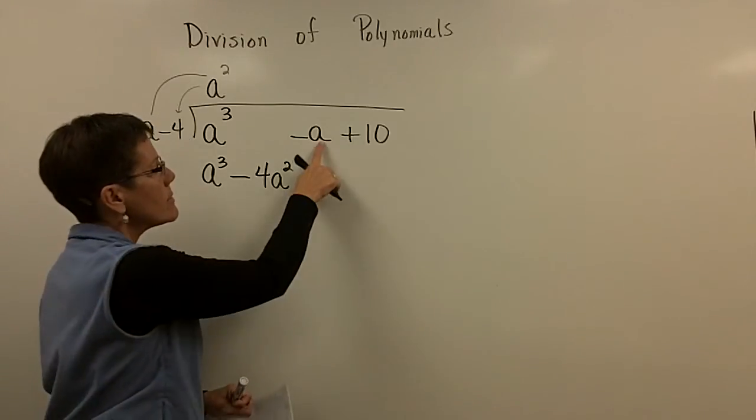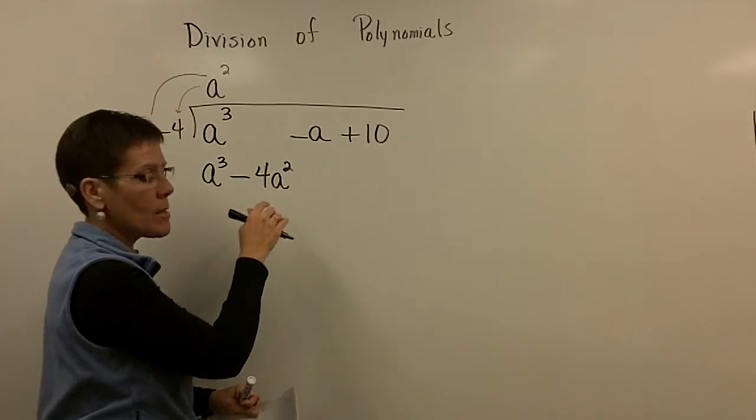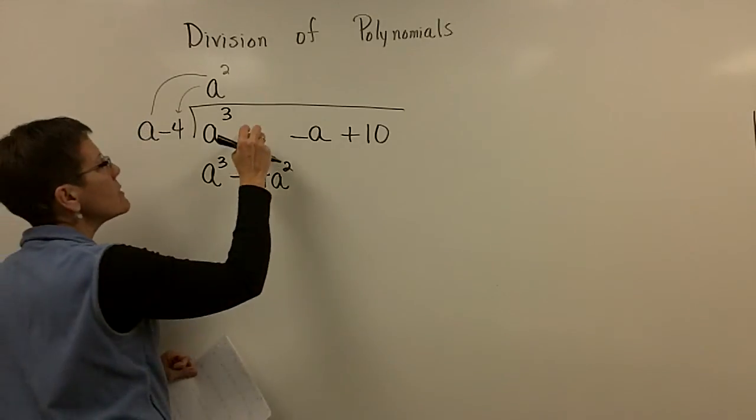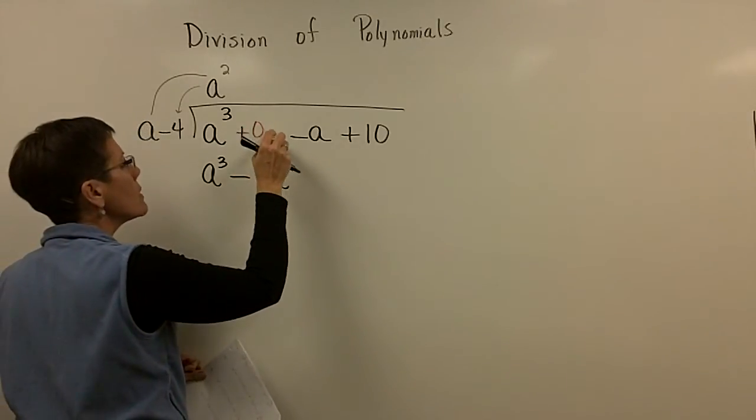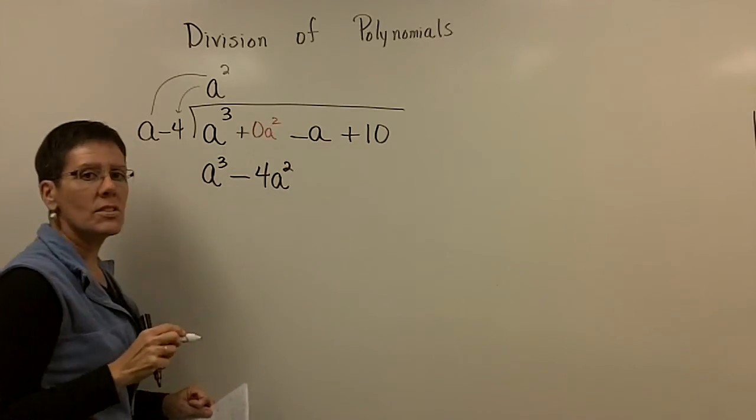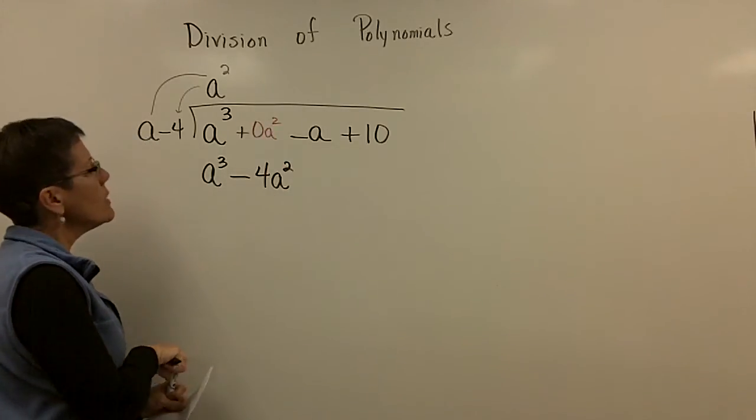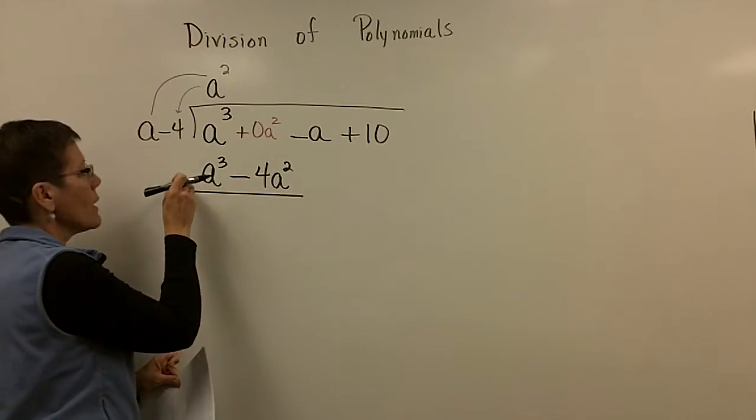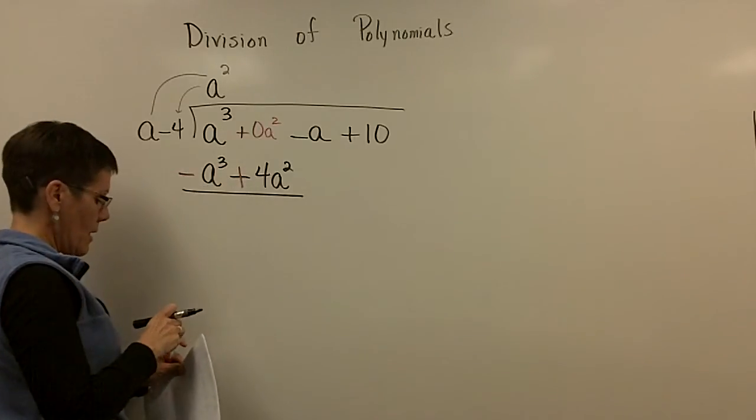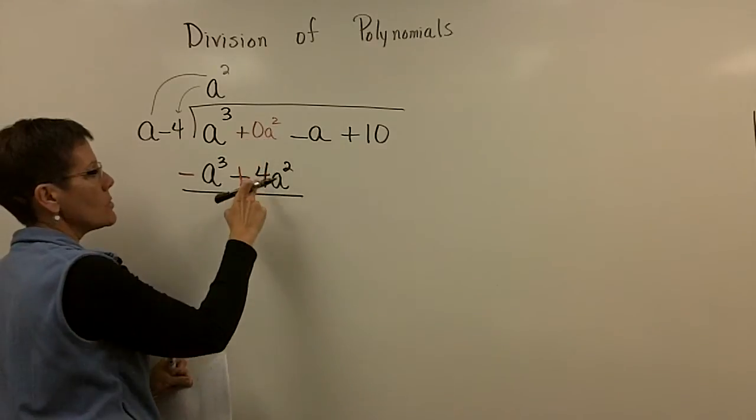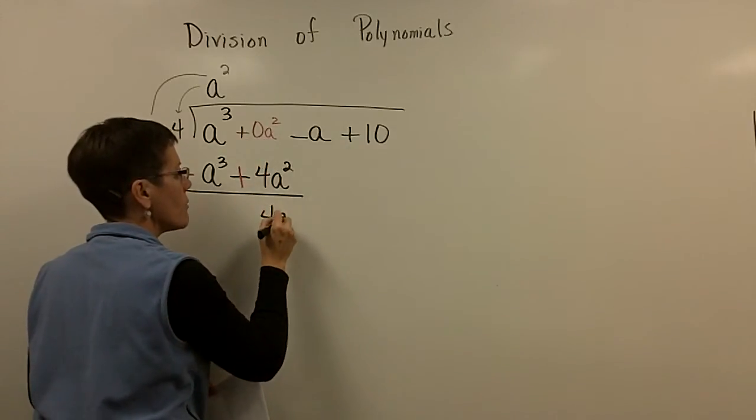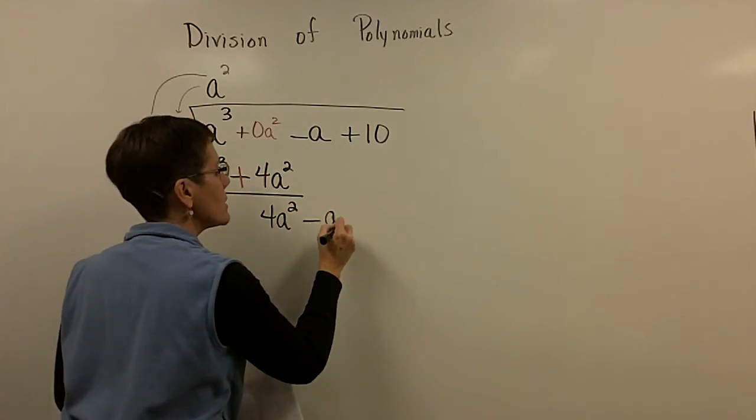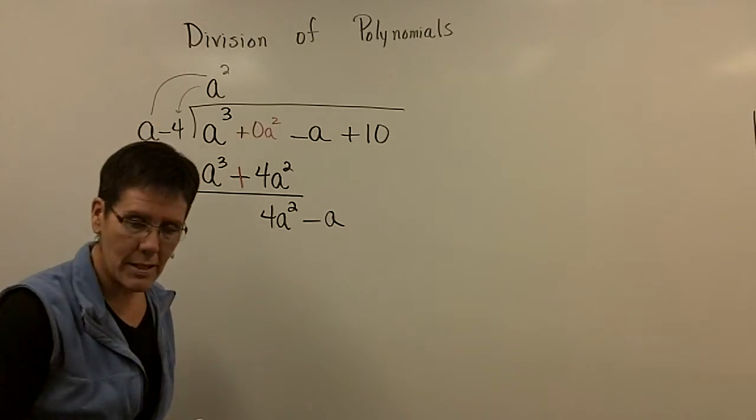This is not a like term with that one. They don't have the same exponent. So I leave a space or I put a little ghost in there. A 0 a squared. So that when I'm ready to subtract this or add the opposite, then I know that I'm going to add nothing to the 4 a squared and get 4 a squared. And then I'll bring down my minus a and I start the process again.